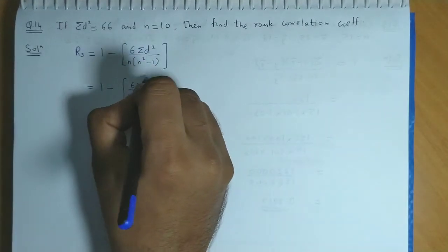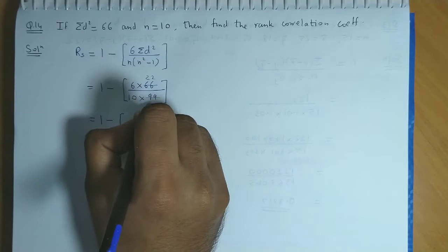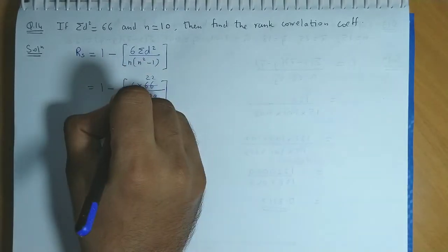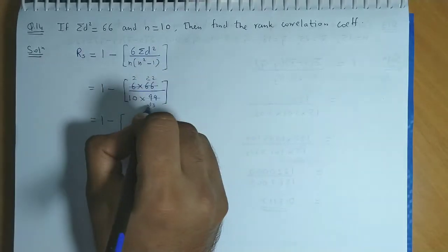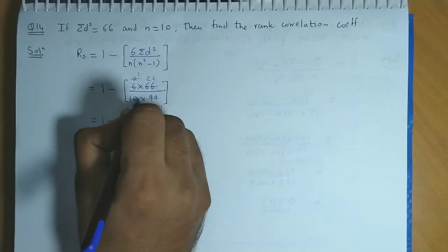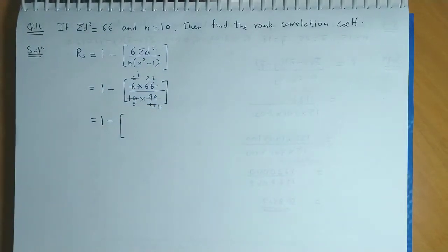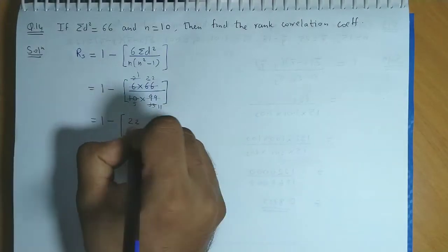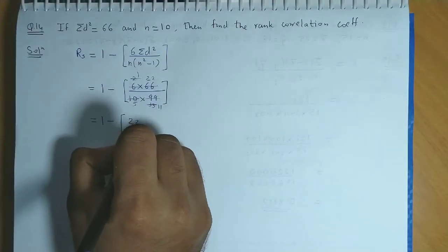If we simplify this: 3 into 22, 3 into 33. 3, 2s are, 3, 11s are, 2, 1s are, 2, 5s are. Basically we have 1 minus 22 upon 55.